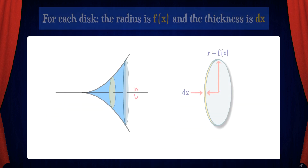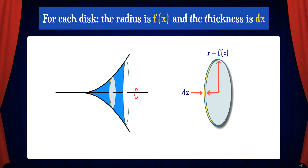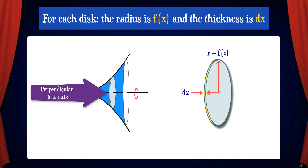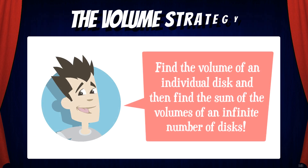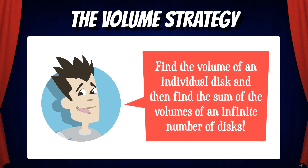For each disk, the radius is f(x) and the thickness is dx. Note that the disk is perpendicular to the x-axis. Now we just need to find the volume of an individual disk and then find the sum of the volumes of an infinite number of disks.